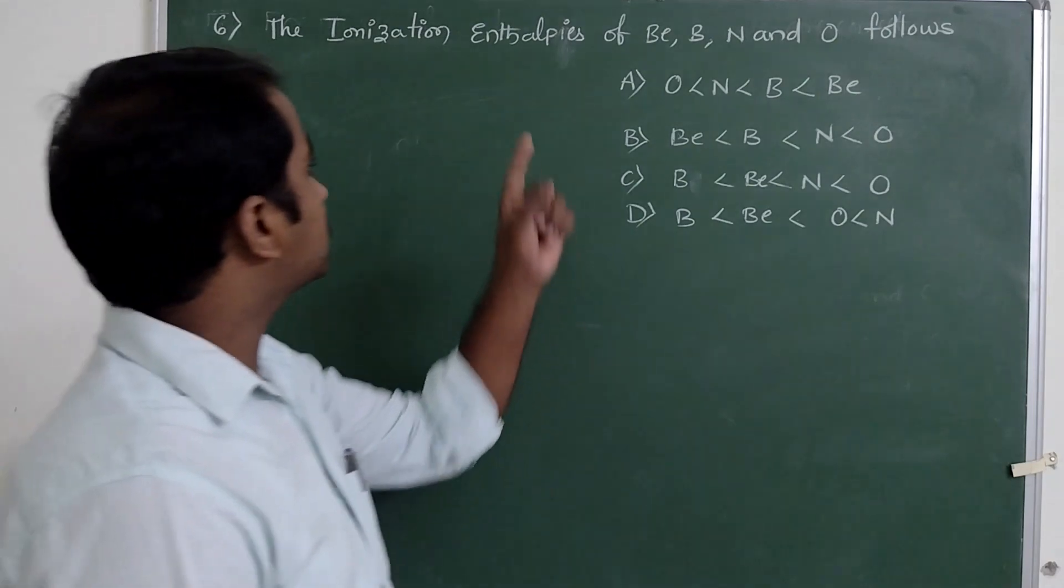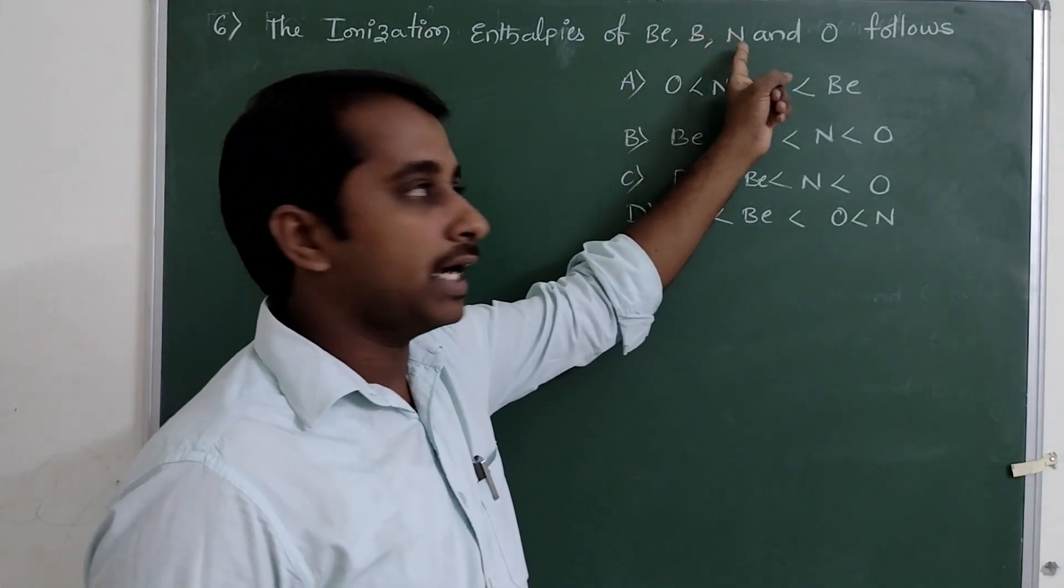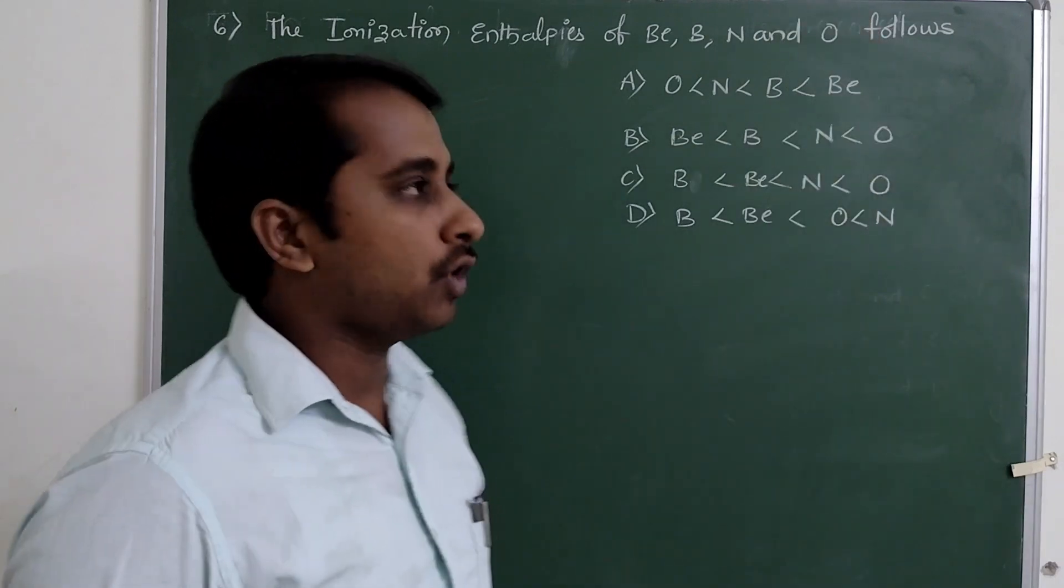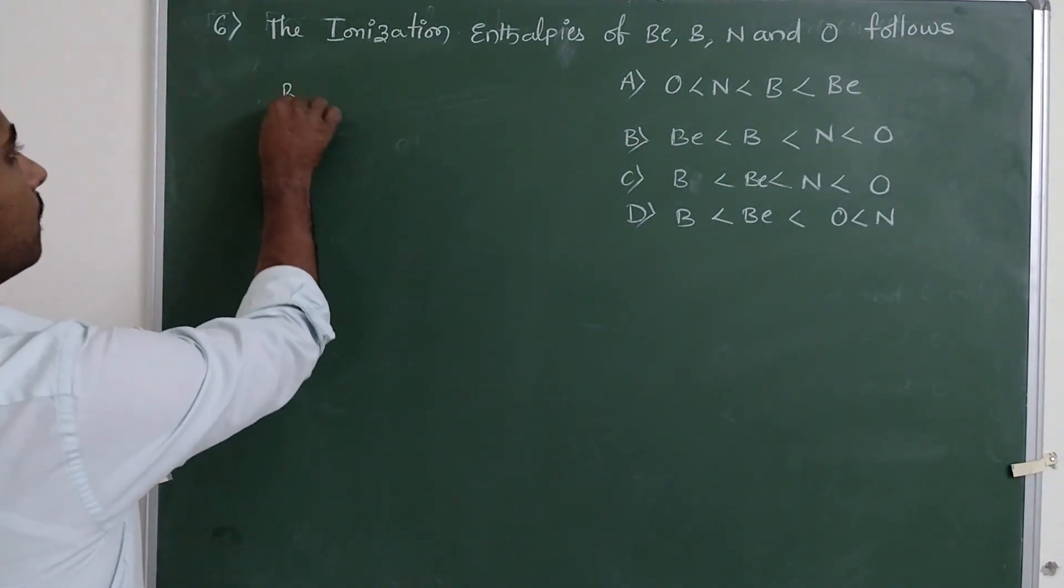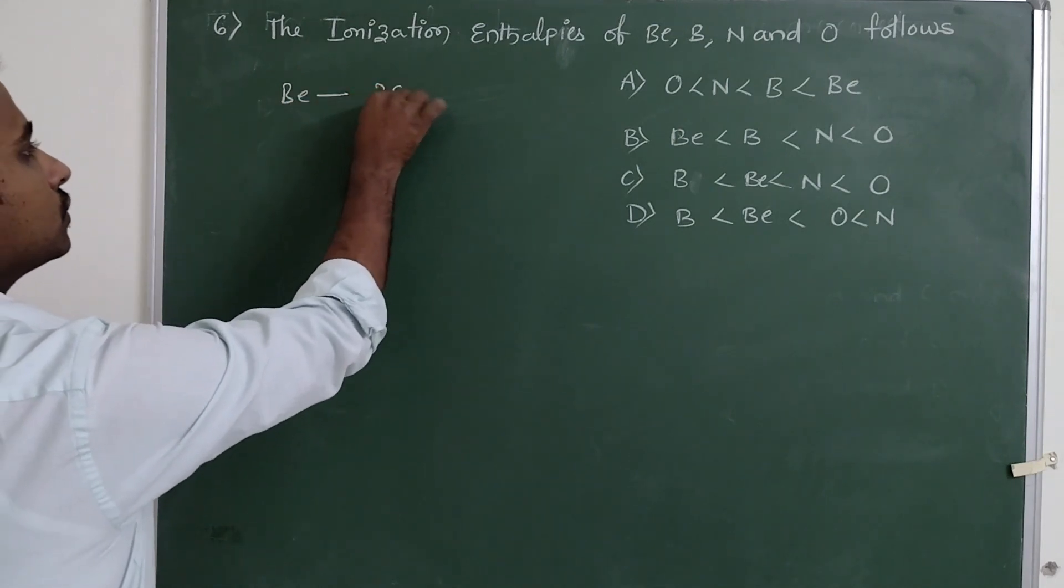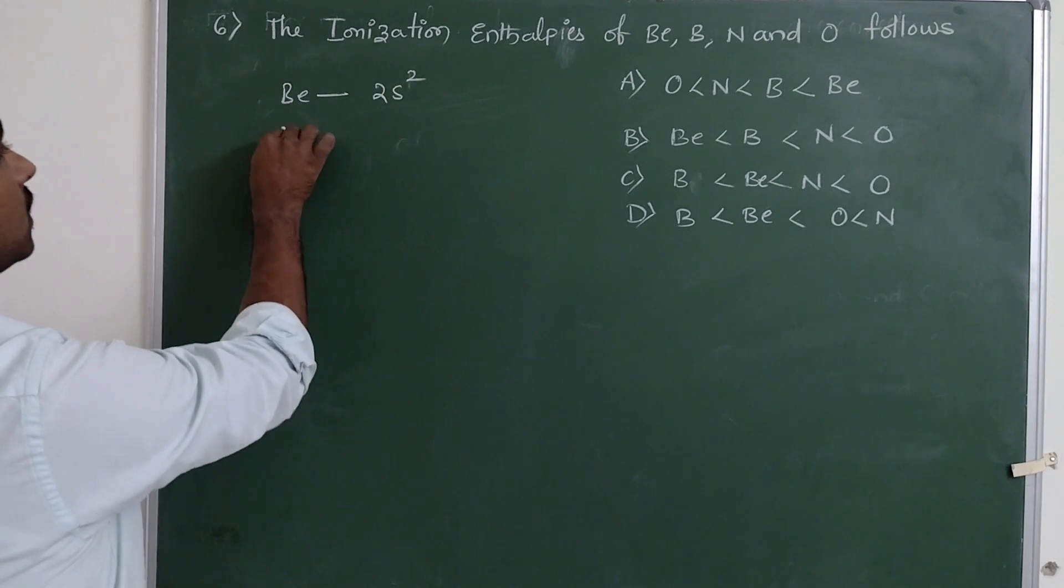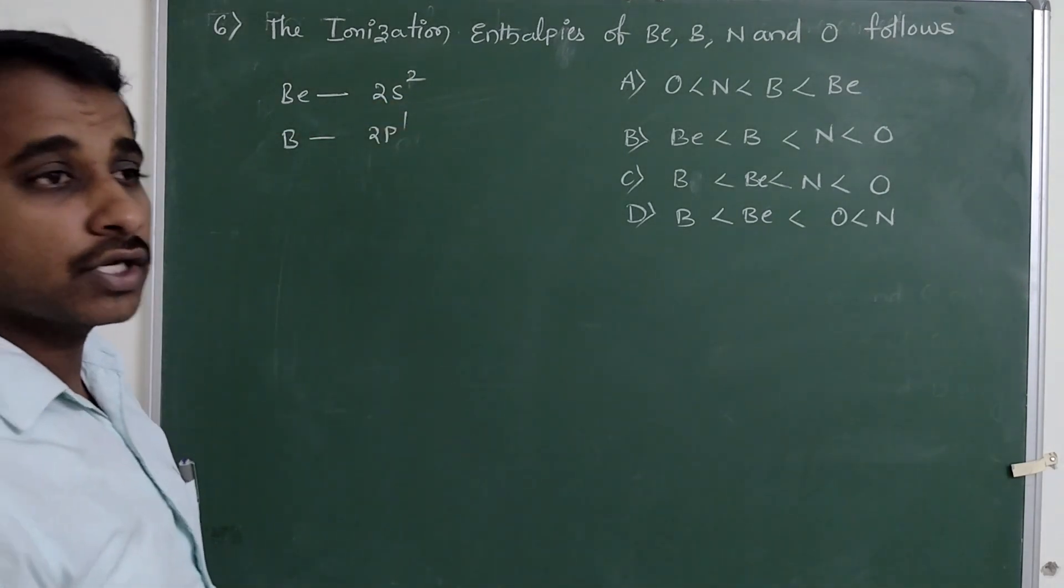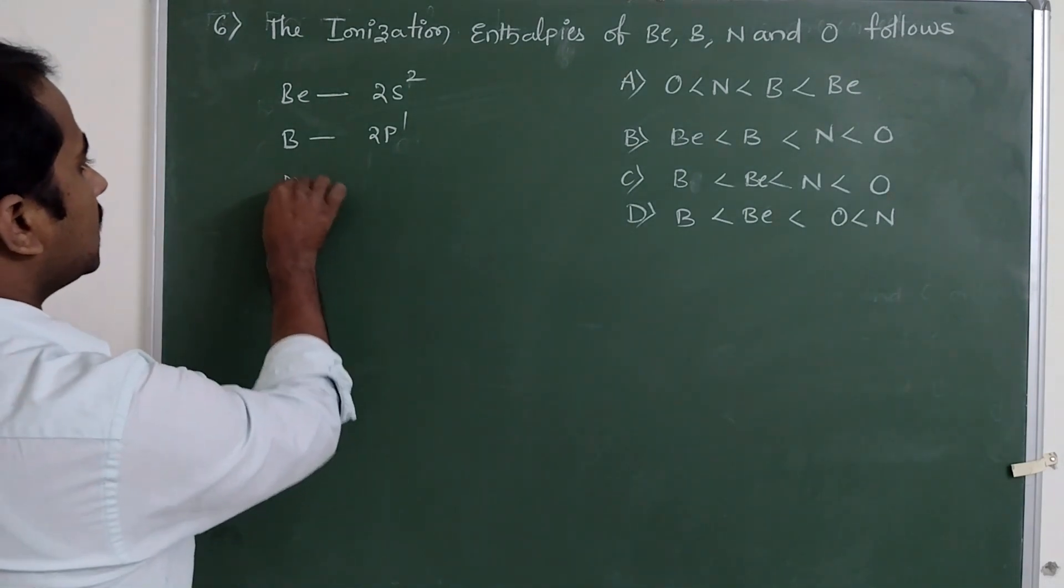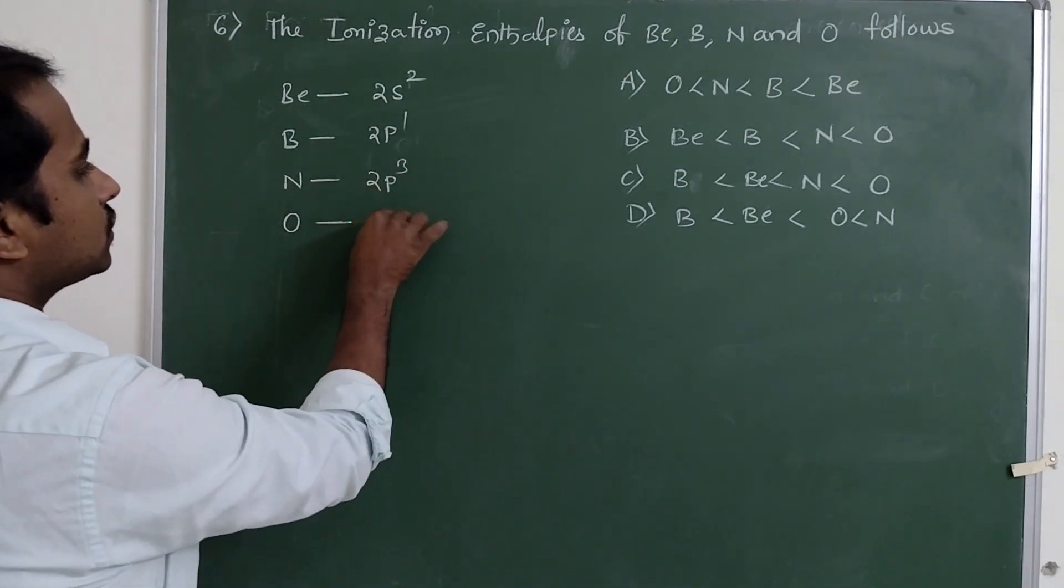The question is: ionization enthalpy of beryllium, boron, nitrogen, and oxygen follows what order? If you see, beryllium is 2s², boron is 2p¹ for the outermost electronic configurations. Nitrogen is 2p³, oxygen is 2p⁴.